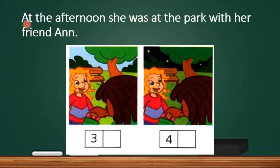The next sentence, in the afternoon, she was at the park with her friend Anne. Again, you have to choose the correct picture between picture number three and picture number four. So, the keyword here is in the afternoon. So, in the afternoon, the sky is bright rather than dark. So, the answer is picture number three. Correct.